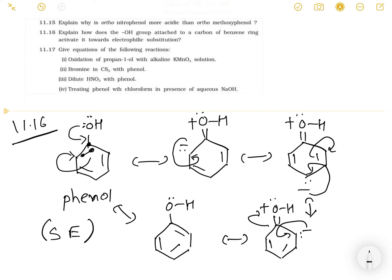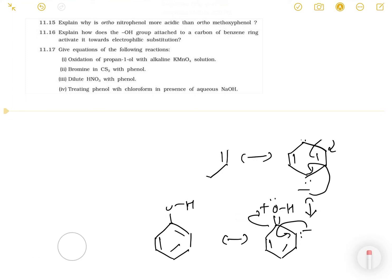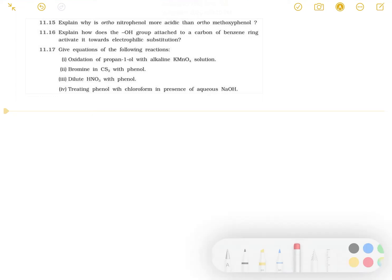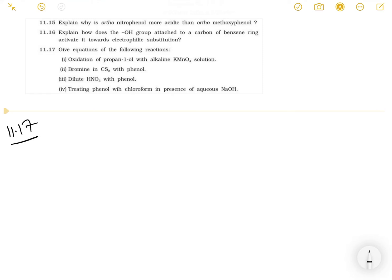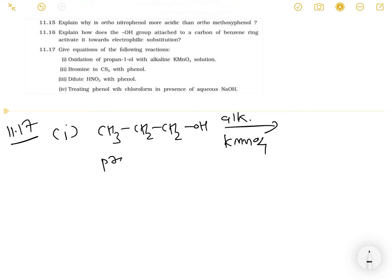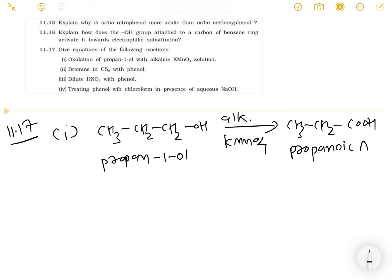Now we will discuss 11.17. The first part: KMnO4 is a strong oxidizing agent. Alkaline KMnO4 is a strong oxidizing agent, so it will oxidize a primary alcohol to an acid directly. Here, propan-1-ol is oxidized to prepare propanoic acid.